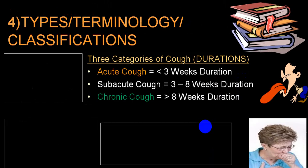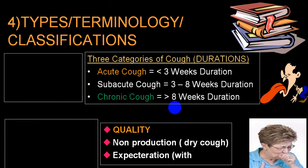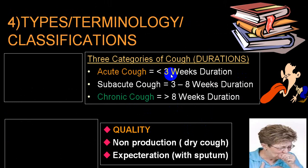Cough can be classified as acute, subacute, and chronic. If cough duration is less than three weeks, it is labeled as acute; between three to eight weeks is subacute; and more than eight weeks is labeled as chronic.